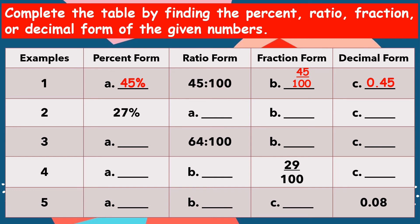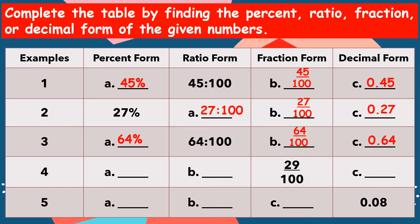For number three, we have 64%. The ratio is 64 is to 100. The fraction is 64 hundredths. And the decimal is 0.64 (64 hundredths). Next, our given is 29 hundredths. For letter A, we have 29%. For letter B, we have 29 is to 100. And for letter C, we have 0.29 (29 hundredths).